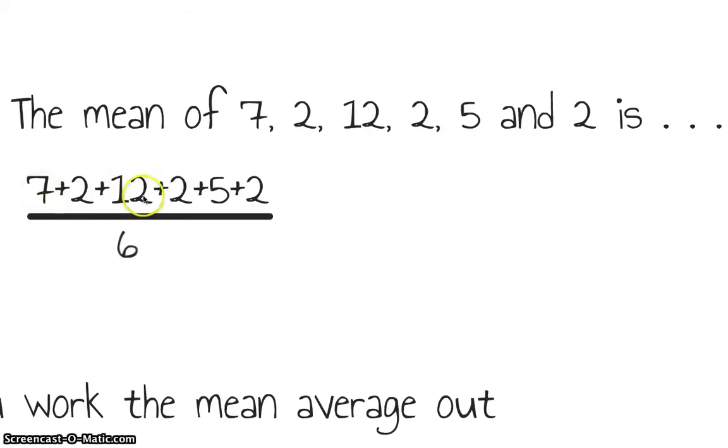So here's a quick example: the mean average of 7 and 2 and 12 and 2 and 5 and 2 is add them all together, 7 plus 2 plus 12 plus 2 plus 5 plus 2, and then divide it by the number of numbers. Now we had six numbers, so we divide by six, and that gives us 30 divided by 6, which is 5. So the mean average for that group of numbers is 5.